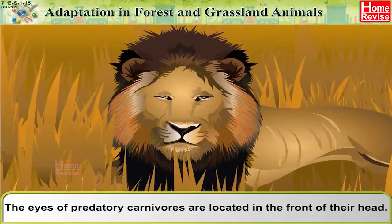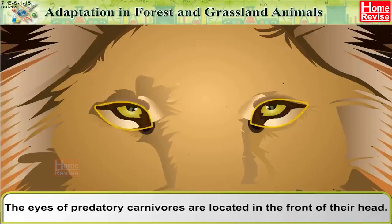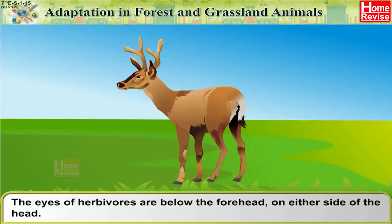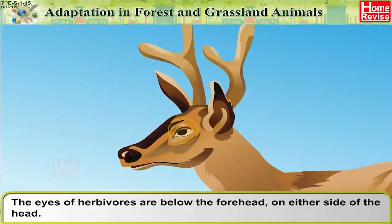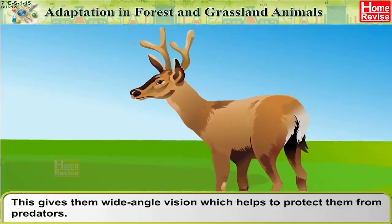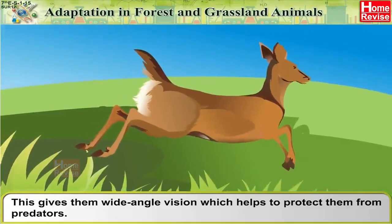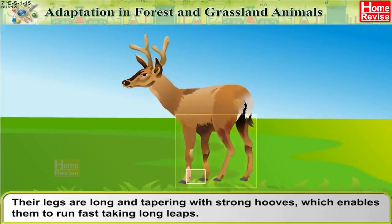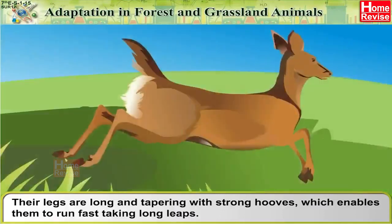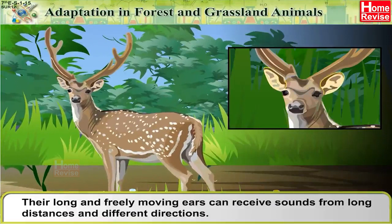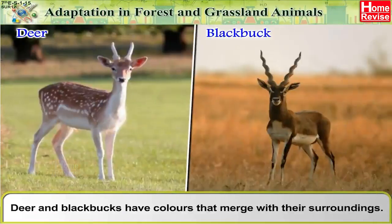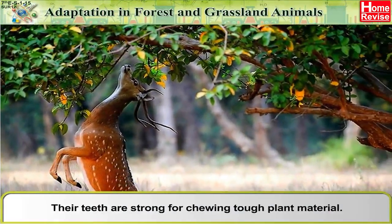The eyes of predatory carnivores are located in the front of their head, helping them to spot their prey from a long distance. The eyes of herbivores are below the forehead on either side of the head, giving them wide-angle vision to protect them from predators. Their legs are long and tapering with strong hooves, enabling them to run fast and take long leaps. Their long, freely moving ears can receive sounds from long distances and different directions. Deer have colours that merge with their surroundings, and their teeth are strong for chewing tough plant material.